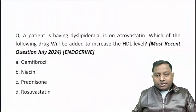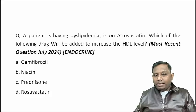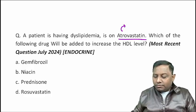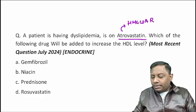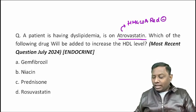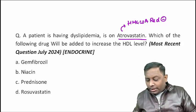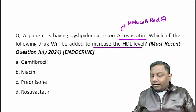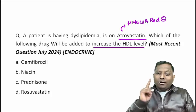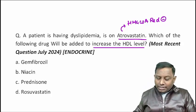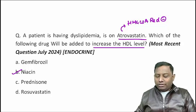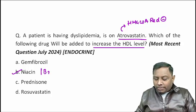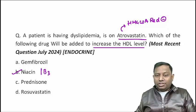The first question: a patient with dyslipidemia is on atorvastatin, which is one of the statins — an HMG-CoA reductase inhibitor. The examiner asks which drug will be added to increase HDL levels. The best drug to increase HDL is Niacin, which is vitamin B3 and actually increases HDL levels.